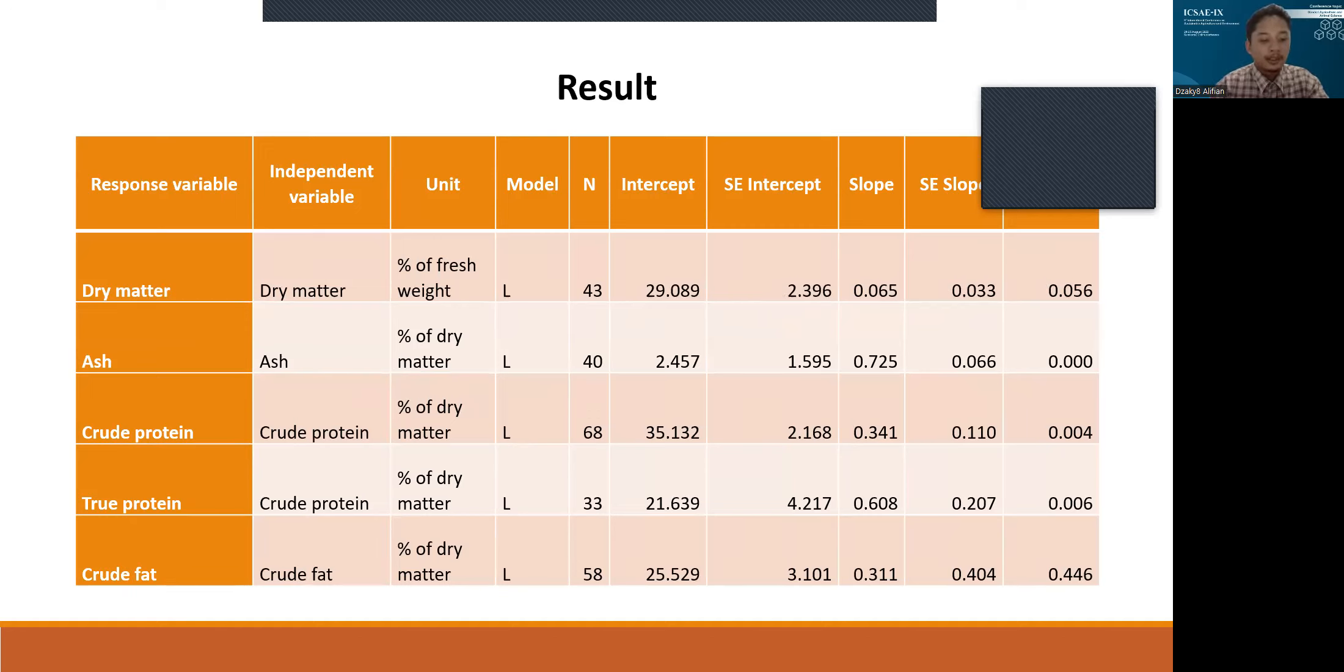Ash substrate has a significant effect on Hermetia illucens. This indicates a positive response to the ash content of the substrate. The height of the substrate also depends on the length of maintenance. The longer the maintenance, the more perfect the formation of the exoskeleton, which is composed of calcium carbonate.